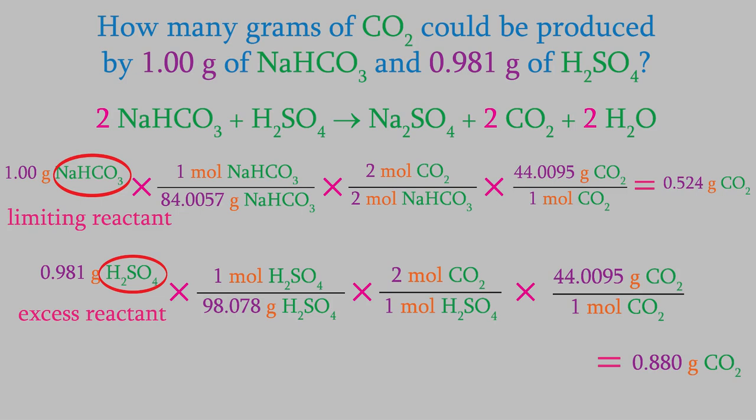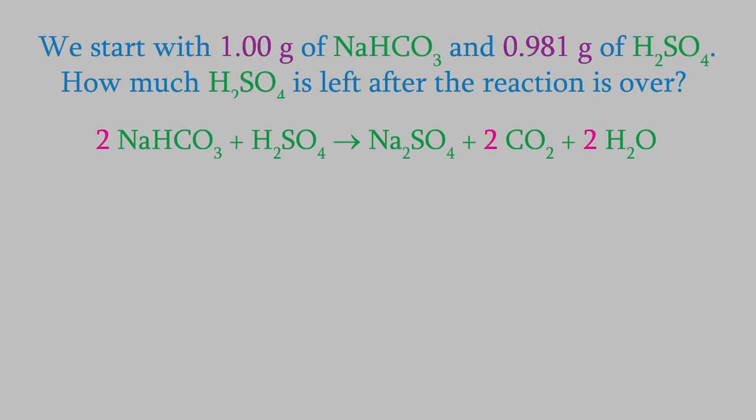Let's try another question. In the last example, we found out that sodium bicarbonate was the limiting reactant and sulfuric acid was the excess reactant. One question we might want to know is, how much sulfuric acid was still left over after the reaction was finished? This question might seem a bit tricky — how can we know how much sulfuric acid didn't react? But another way of looking at it is, how much sulfuric acid did get used in the reaction? And that's a problem we do know how to answer.